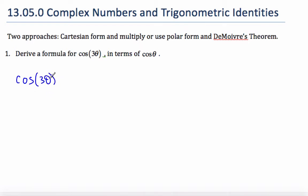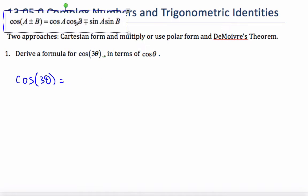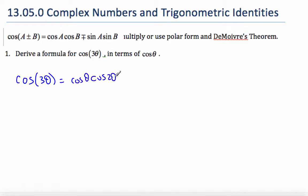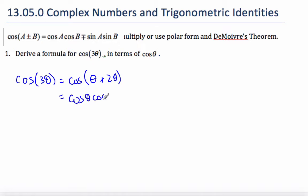So if I want cosine 3 theta in terms of cosine theta, I'm going to have to use my sum and difference formulas. Here's the one for cosine. I'm going to take 3 theta and make it cos theta plus 2 theta, which then, using my formula, translates to cos theta cos 2 theta minus sine theta sine 2 theta.